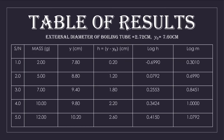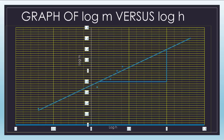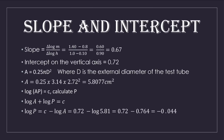We are plotting a graph of log M on the vertical axis against log H on the horizontal axis. This is a straight line graph that makes an intercept with the log M axis. One of our values gave us a negative value, so I extended the graph to the negative point. This is how the graph looks — a straightforward graph of log M against log H.